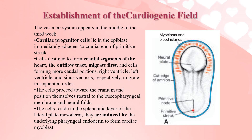The vascular system appears in the middle of the third week. Cells destined to form the cardiogenic area migrate from the cranial segment of the primitive node beneath the ectoderm into the splanchnic layer of the mesoderm, coming to lie anterior to the neural plate. These cells, residing in the splanchnic layer of the lateral plate, are induced by the underlying pharyngeal endoderm to form cardiac myoblast cells.